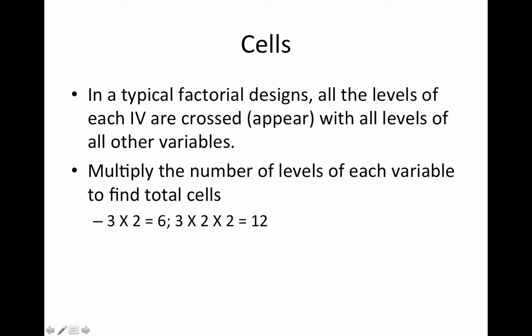A cell is a treatment combination. In a factorial design, all the levels of each IV are crossed with all the levels of each of the other independent variables. To find the total number of cells, you just multiply the number of levels of each variable together. So for a three-by-two design, three times two is six. For a three-by-two-by-two, three times two is six times two is twelve — twelve treatment combinations. For the three-by-two, there would only be six.